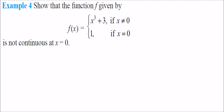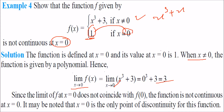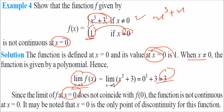Show that a given piecewise function is not continuous at x = 0. The function is defined at x = 0 with value 1. When x ≠ 0 the function is a polynomial, and applying the limit as x→0 gives 3. The value at x = 0 is 1 but the limit is 3 — they do not coincide. Therefore this function is not continuous at x = 0. Note: all polynomial functions are continuous; x = 0 is the only point of discontinuity here.